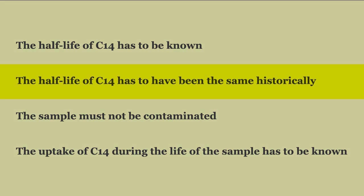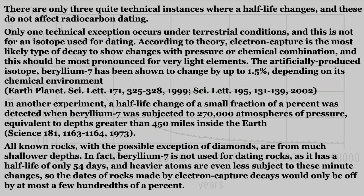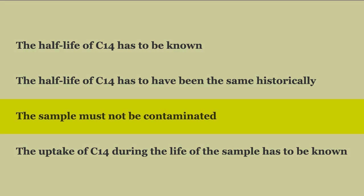The half-life of C14 has to have been the same historically. This is quite easy to confirm if you think about it. If the half-life of radioactive materials differed over time, then the decay rates of those materials would differ over time, making it impossible to plot consistent graphs for different aged samples. The fact that many thousands of samples from worldwide sites all produce dates which fit the expected curve provides confidence that decay rates have remained constant. There are a couple of technical instances where the half-life of an isotope may change, but they do not apply in any way to radiocarbon dating, or any radioactive dating technique whatsoever.